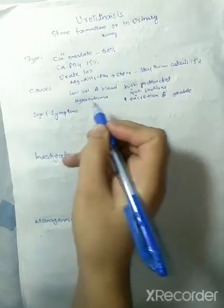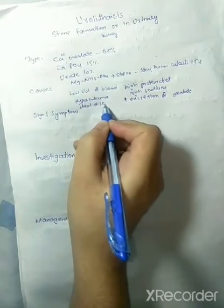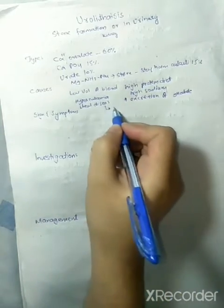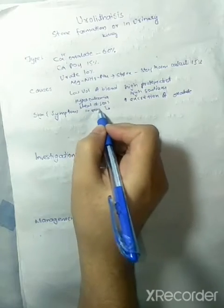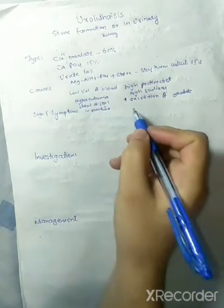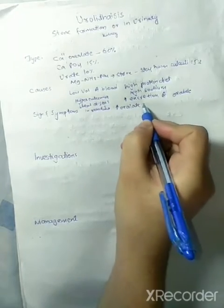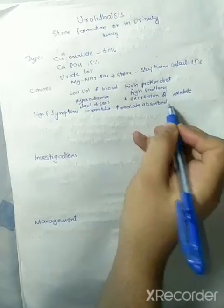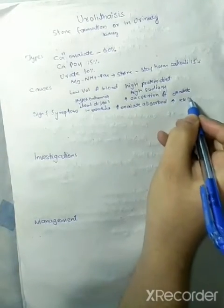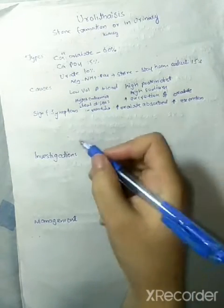Hyperoxaluria is another acquired cause. In this disease there is increased oxalate absorption, so when more oxalate is absorbed there is increased urinary excretion. When there is increased excretion of oxalate, there is formation of oxalate stone.